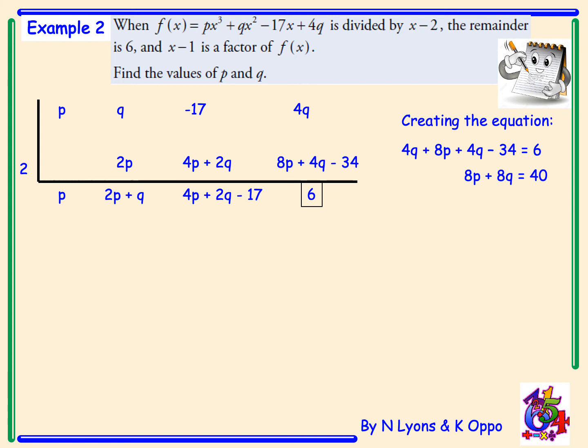We're now going to use the other piece of information we were given, that x minus 1 is a factor of f(x). Therefore, put 1 through a synthetic division, 1 times p is p, q plus p, then multiply this by 1, will be p plus q,